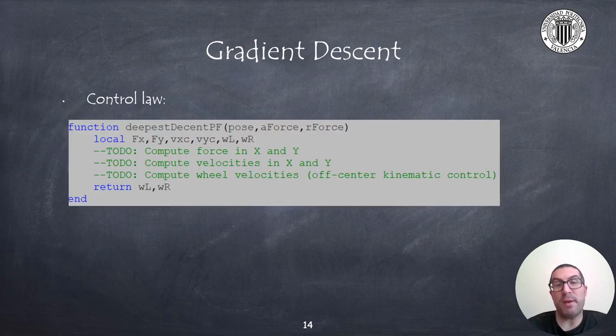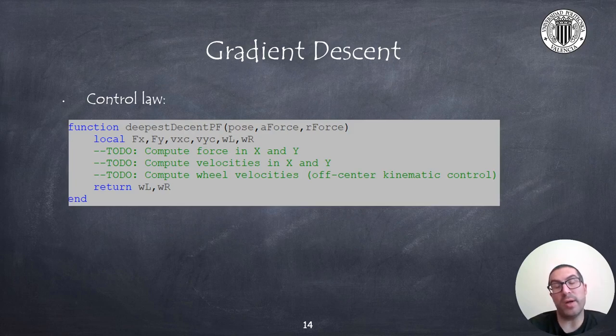The last function to implement is a function that combines everything. In this case it needs to return the wheel speeds based on the robot position, the attractive and the repulsive force based on the previous slide. Just implement the formulas on the previous slide.